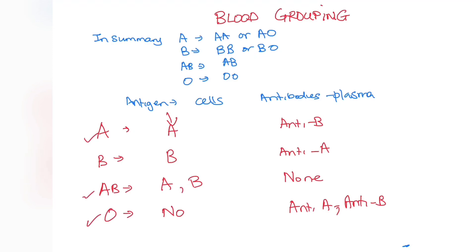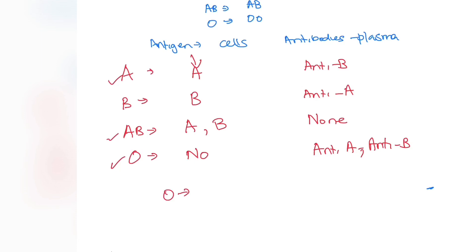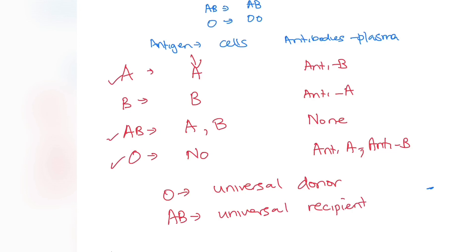For the Rhesus system, a positive or negative will be added to the blood group — we'll look at that separately. You should know that O is therefore the universal donor, and AB is the universal recipient. This means if you're O, you can donate to all blood groups. If you're AB, you can receive from all blood groups, but the drawback is that AB can only donate to AB.